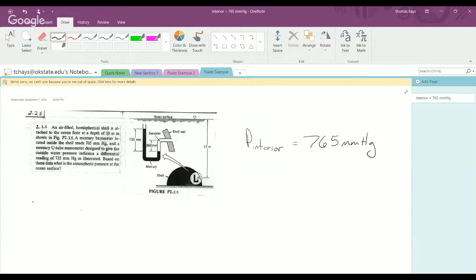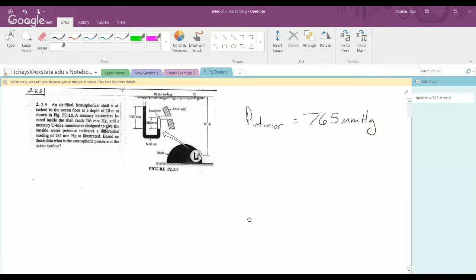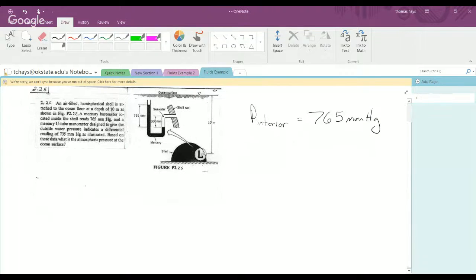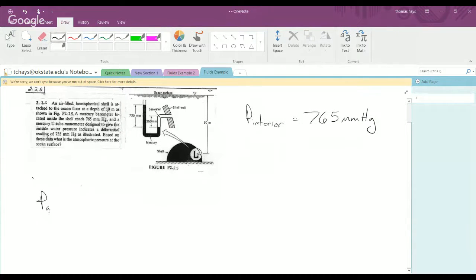So, this really is just a hydrostatic problem combined with a little bit of manometers. So we basically start summing up from our known condition, or the one we want to find in this case. So we'll say pressure of the atmosphere, and then we start adding pressures until we get to the interior pressure of the sea lab environment, because we know that pressure. It's given to us as 765 mmHg. We can convert that when we need it.